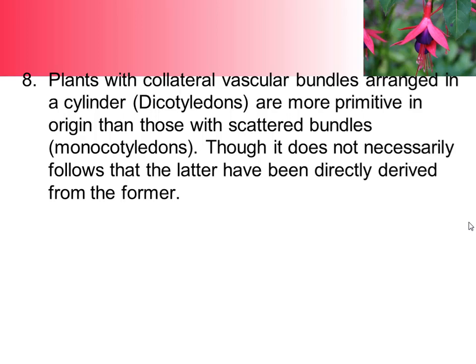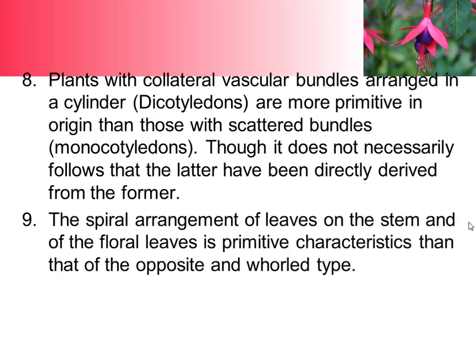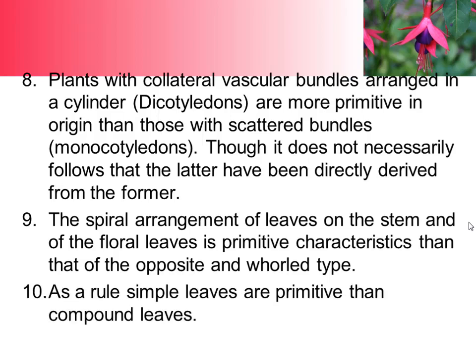The spiral arrangement of leaves on the stem and on the floral leaves is a more primitive characteristic than that of the opposite and whorled types. As a rule, simple leaves are more primitive than compound leaves, meaning that compound leaves have evolved from simple leaves.